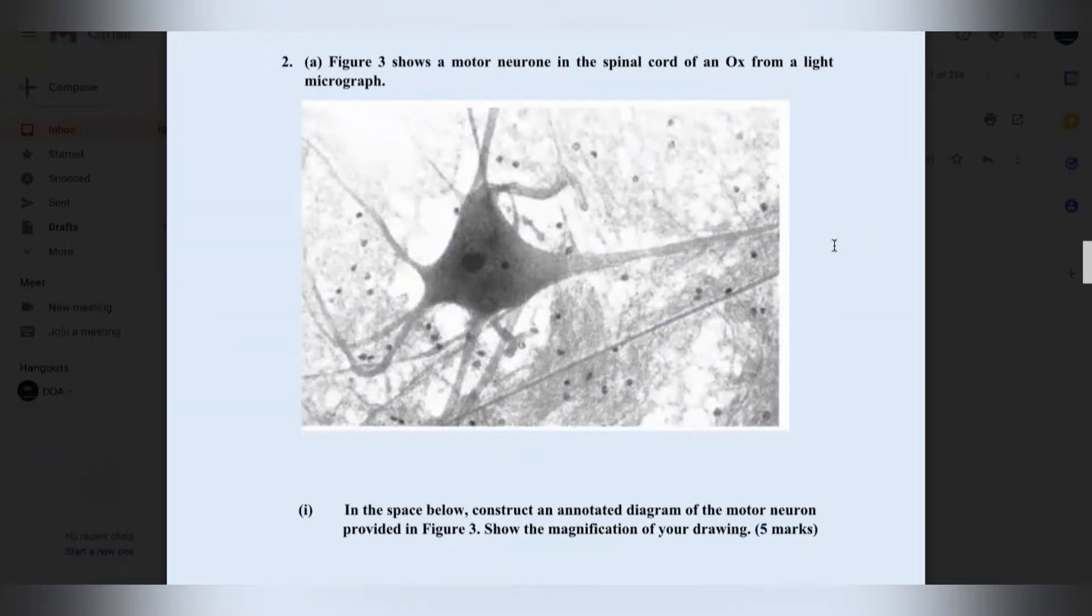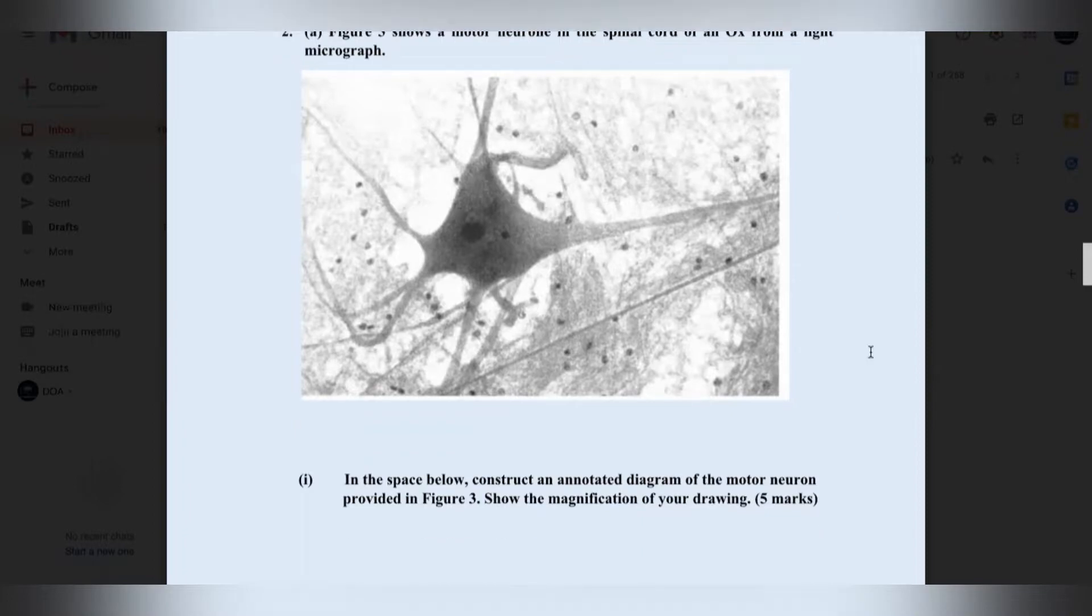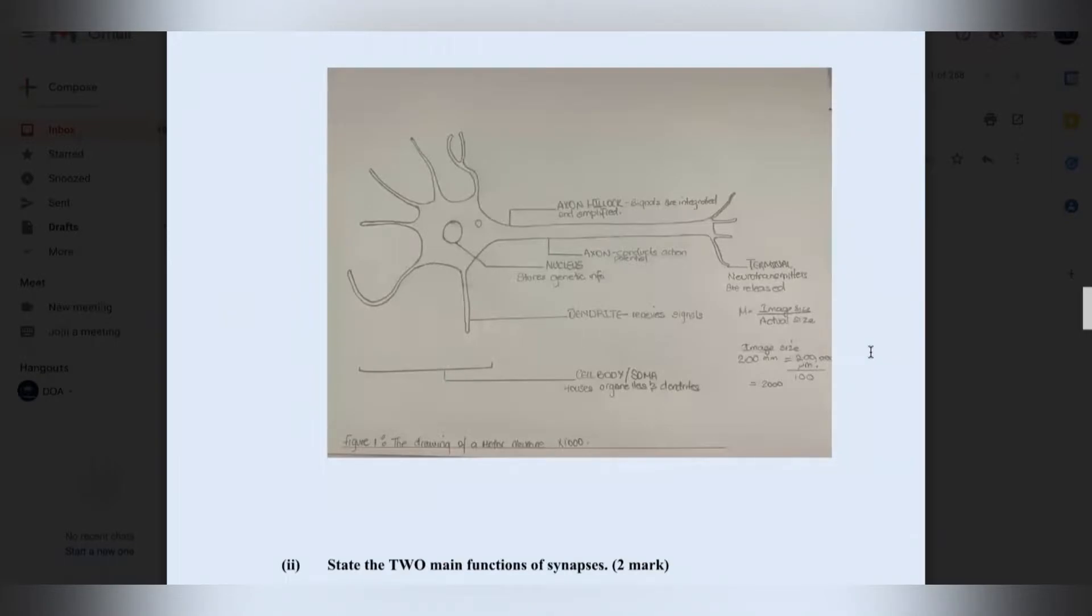So number two, figure three shows a motor neuron in the spinal cord of an ox from a light micrograph. Take a minute to look at the motor neuron here. Can I ask you guys, what is a motor neuron? I said that the motor neuron or efferent neuron is that neuron transmit impulses from the spinal cord to the skeletal and smooth muscles. Here in the space below, construct an annotated diagram of the motor neuron provided in figure three and show the magnification of your drawing. Here is my drawing of the motor neuron. I've also attached to my magnification. For biology drawings, we label to the right and the title is placed below the drawing. And I have also placed my annotations there.